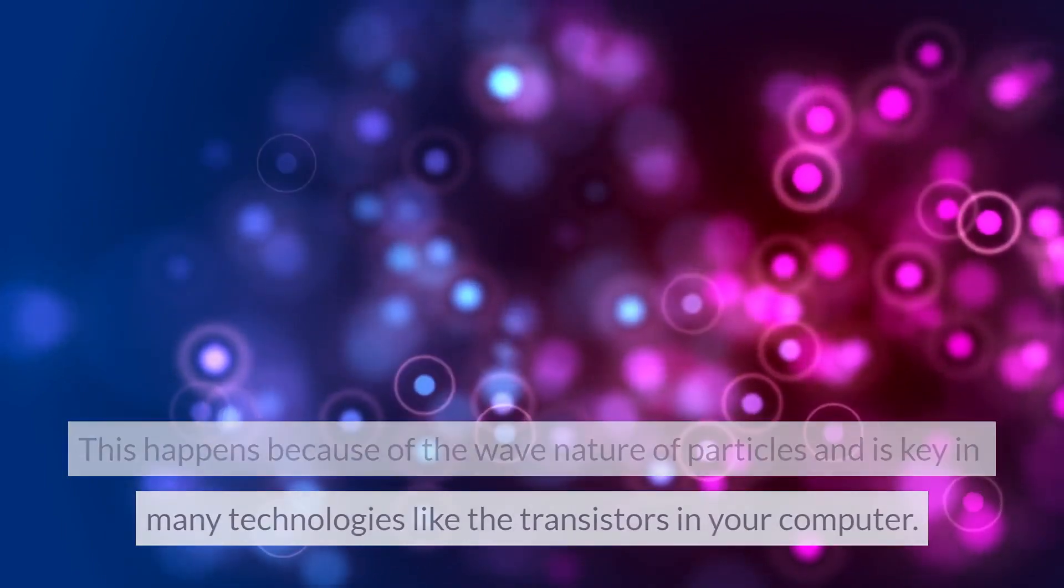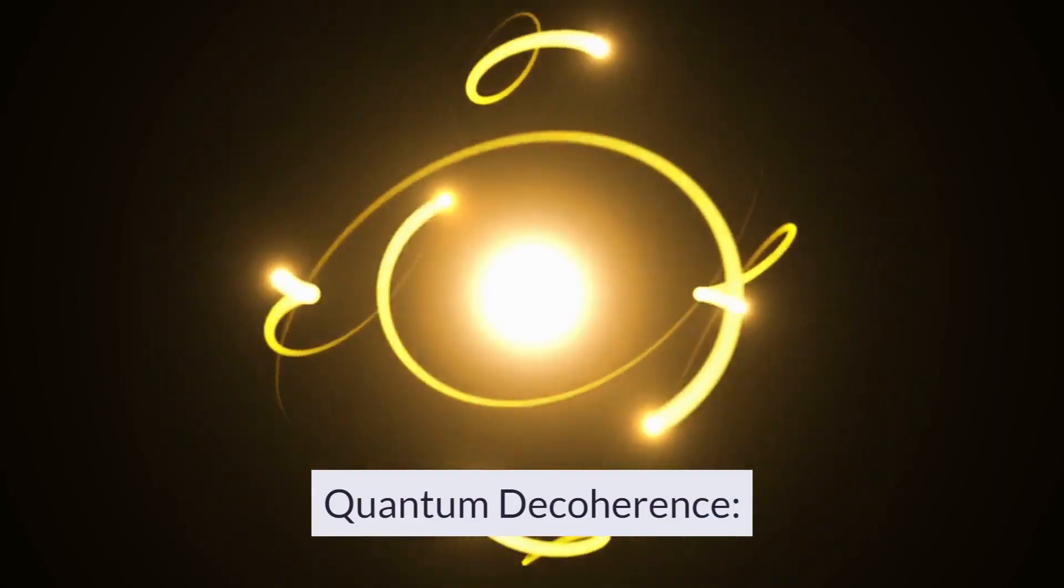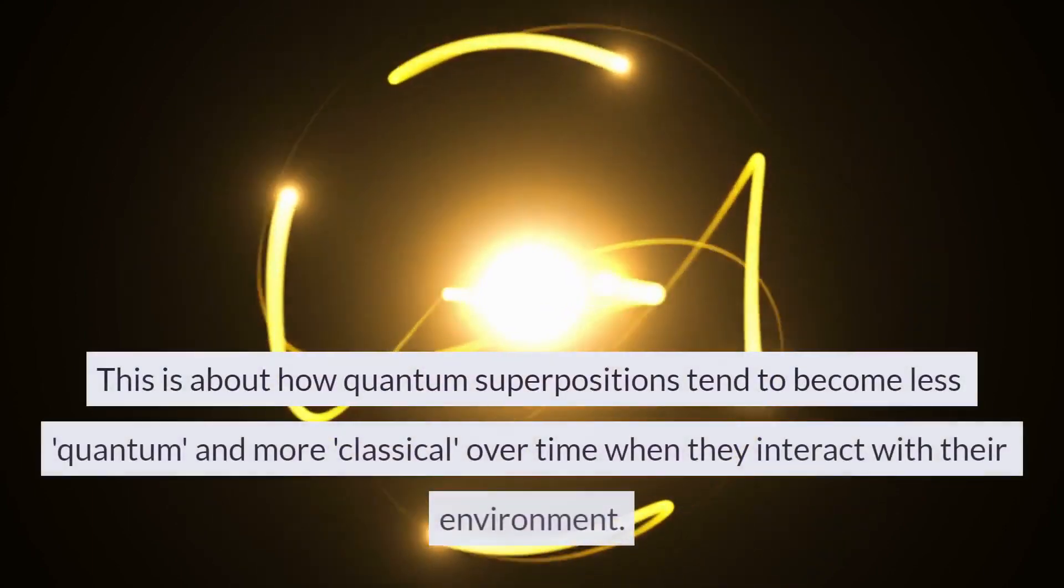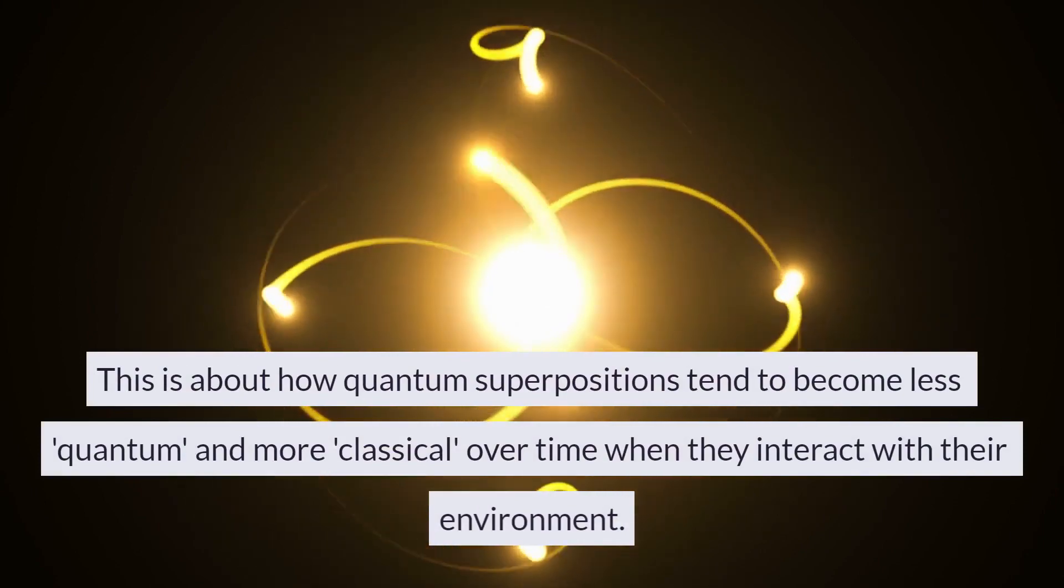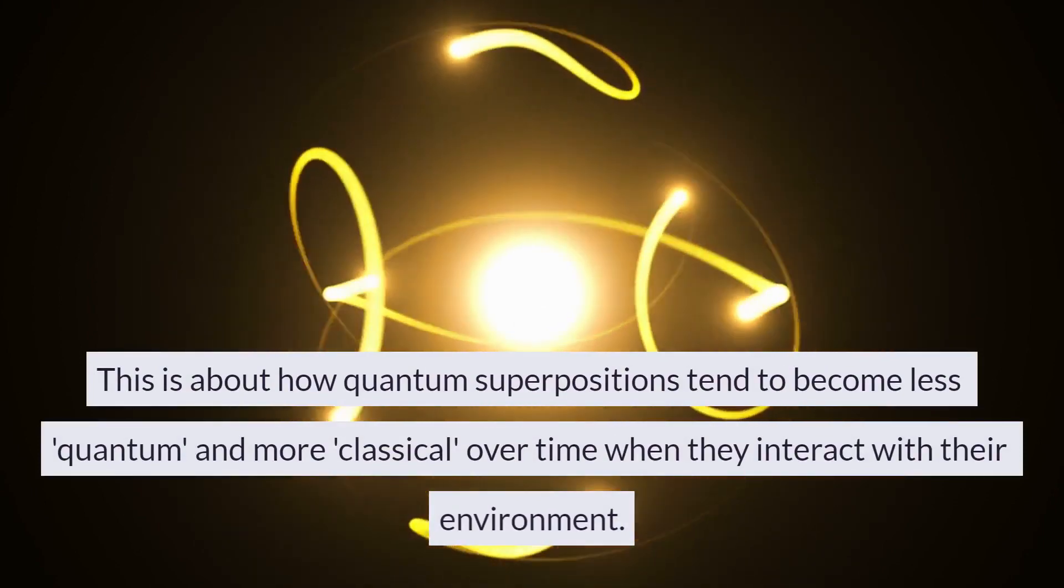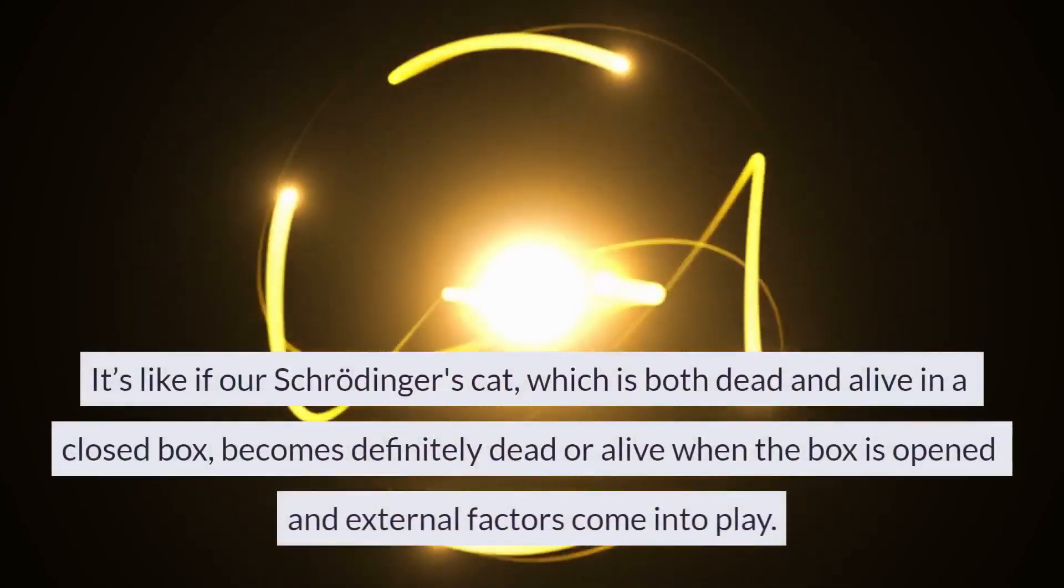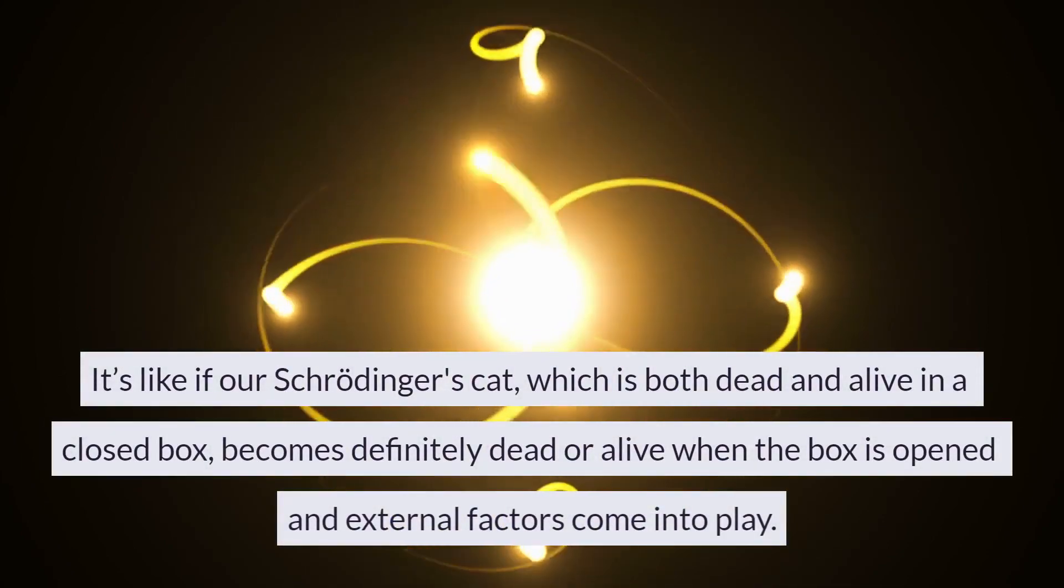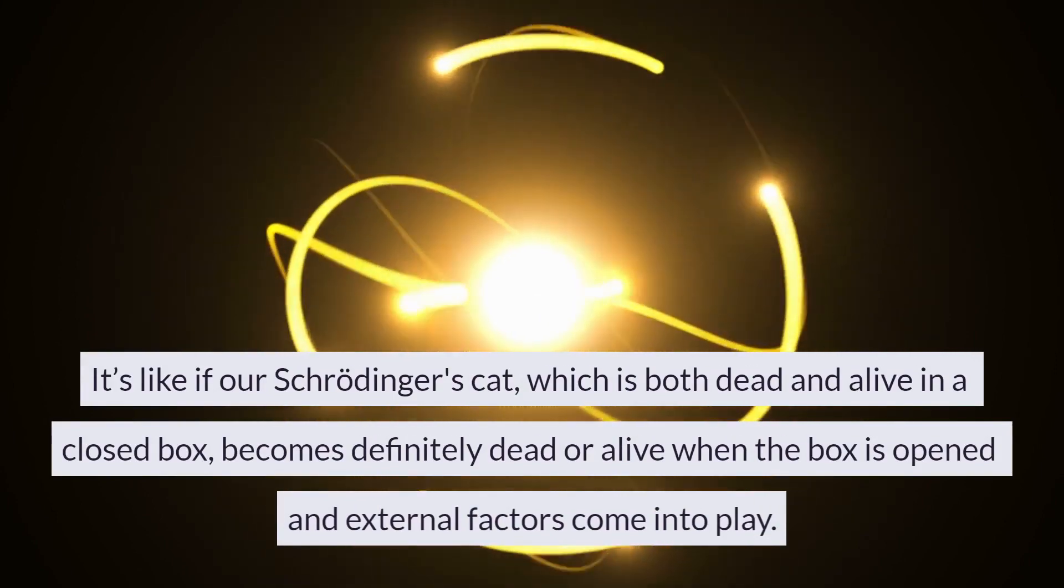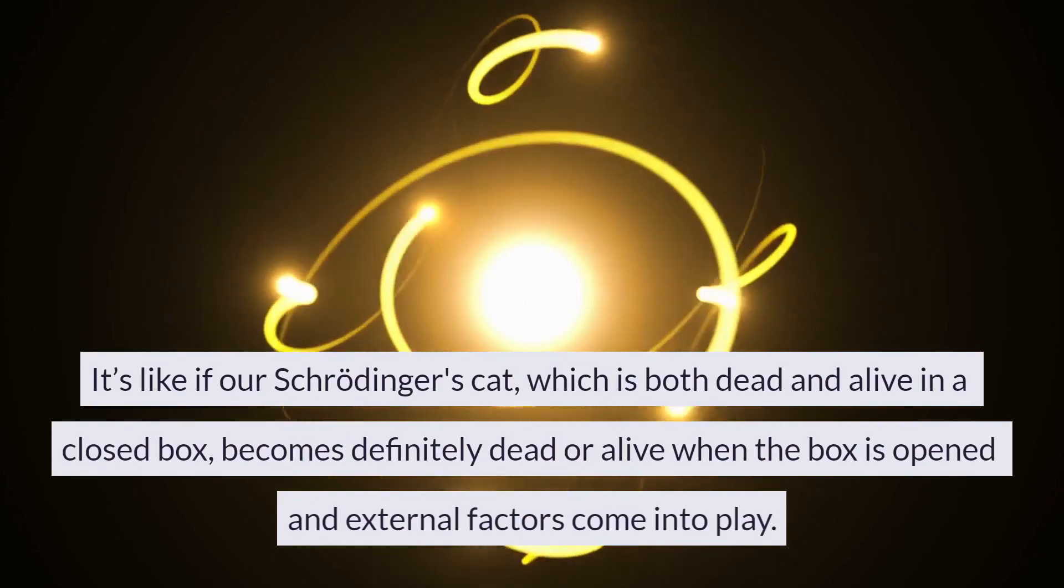Quantum decoherence is about how quantum superpositions tend to become less quantum and more classical over time when they interact with their environment. It's like if our Schrödinger's cat, which is both dead and alive in a closed box, becomes definitely dead or alive when the box is opened and external factors come into play.